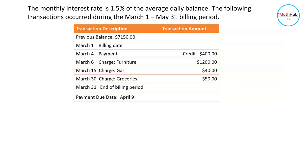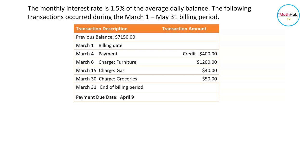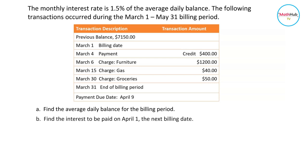In this exercise we are going to calculate the interest using the average daily balance method. The monthly interest rate is given to be 1.5 percent of the average daily balance. The transactions for the billing period March 1 to March 31 are shown. We want to find the average daily balance for the billing period, round the answer to the nearest cent, find the interest to be paid on April 1st, and find the balance due on April 1st.